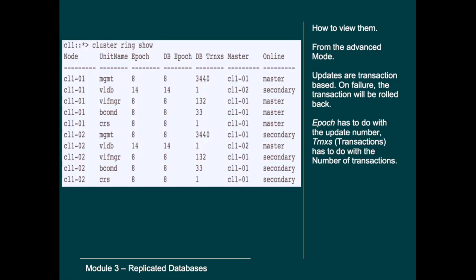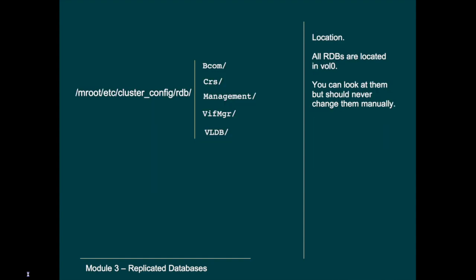The command to view the masters and secondaries is 'cluster ring show' from the advanced level. The master nodes are responsible for updating all the other nodes in the cluster. These updates are transaction-based, so if something goes wrong the entire transaction will be cancelled by the master node.